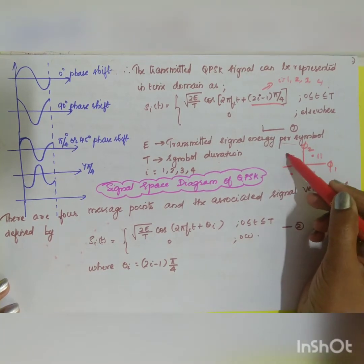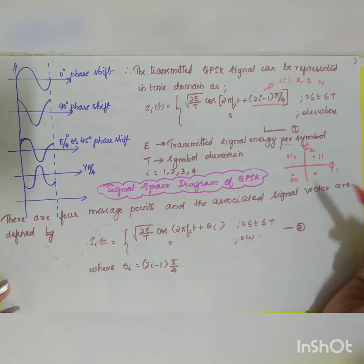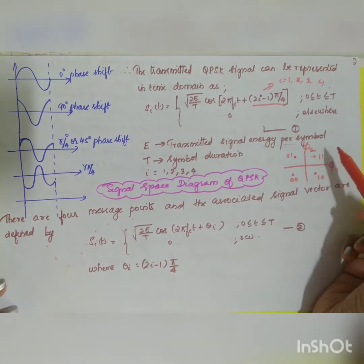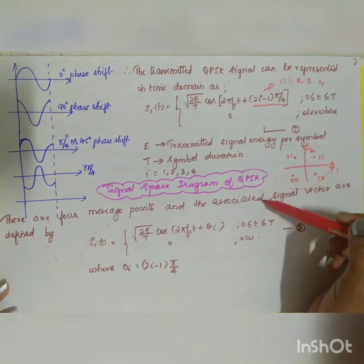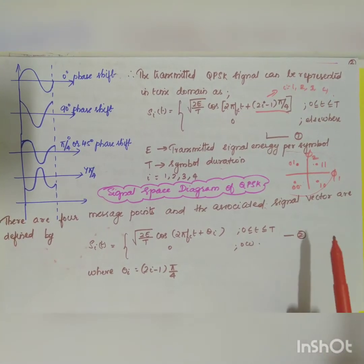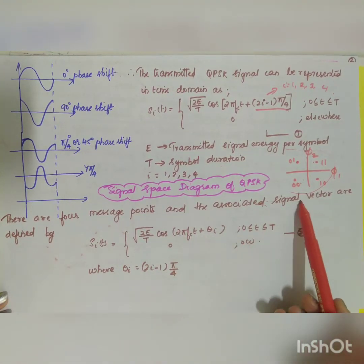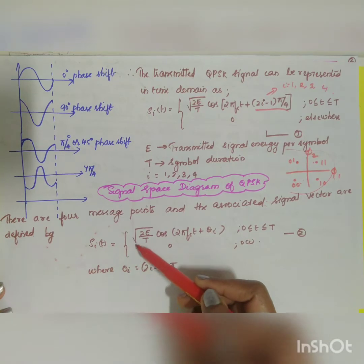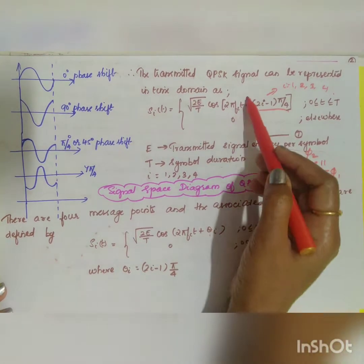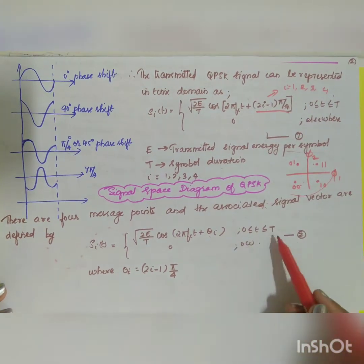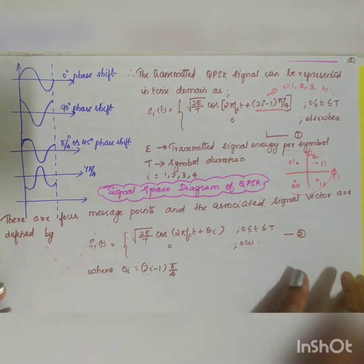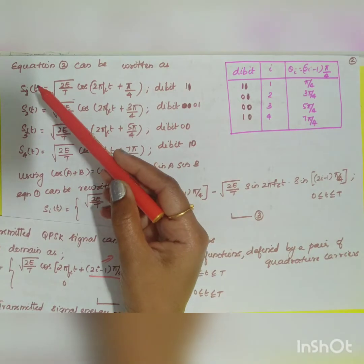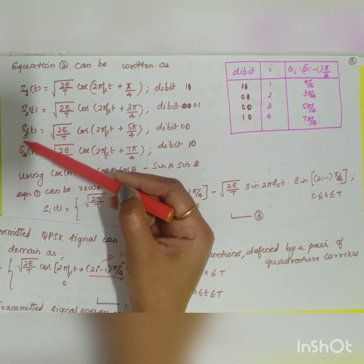The signal space diagram of QPSK shows four points. The quadrants are labeled: first quadrant is 11, second quadrant is 01, third quadrant is 00, and fourth quadrant is 10. There are four message points and the associated signal vectors are defined by s_i(t) = sqrt(2E/T) · cos(2πf_c·t + θ_i), where θ_i = (2i−1)·π/4, giving signals s1(t), s2(t), s3(t), and s4(t).